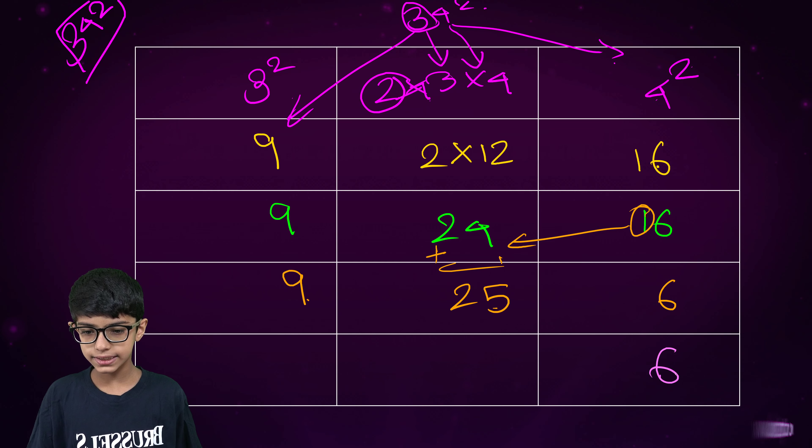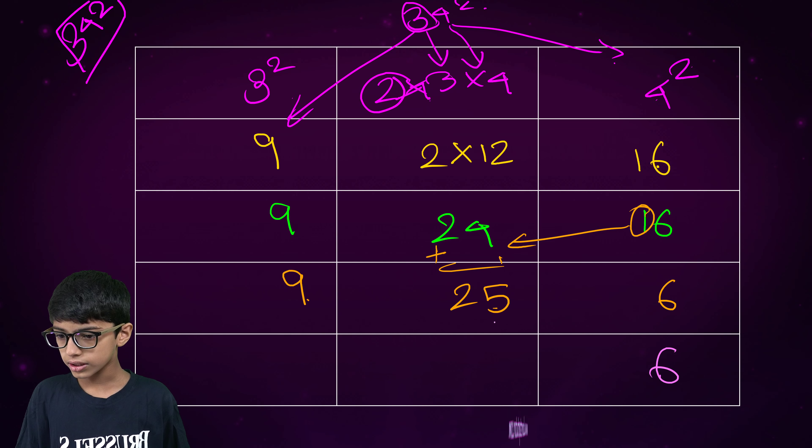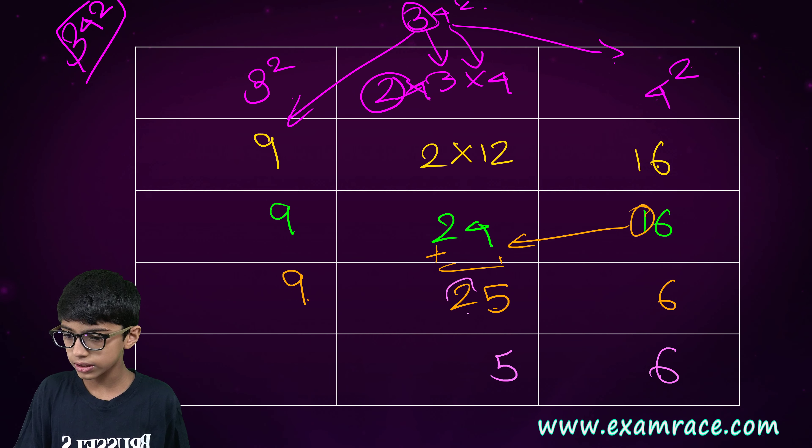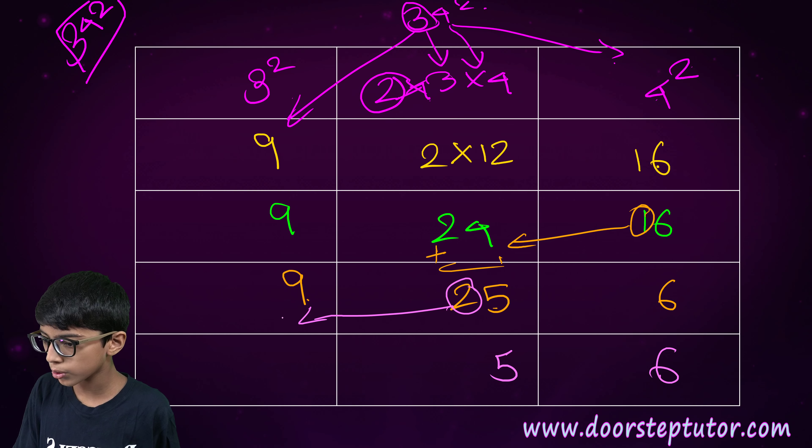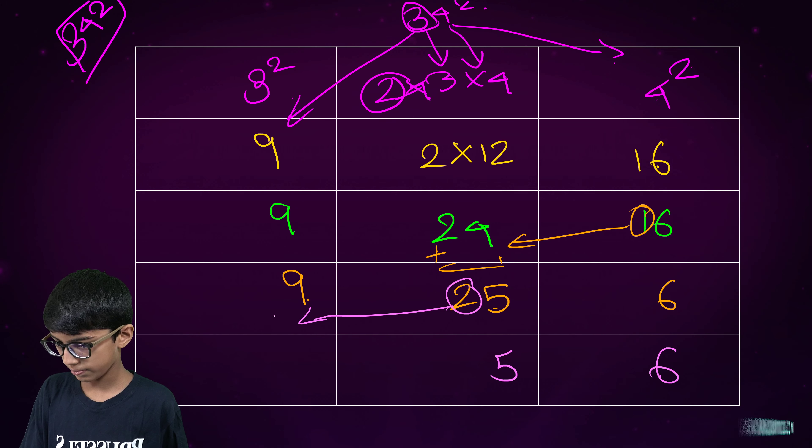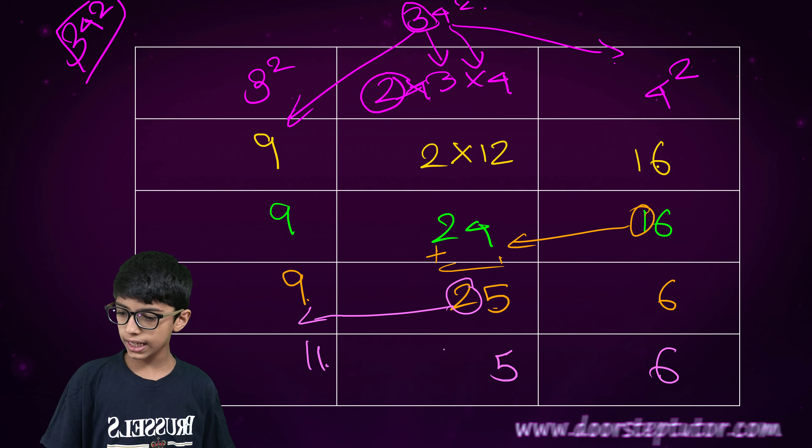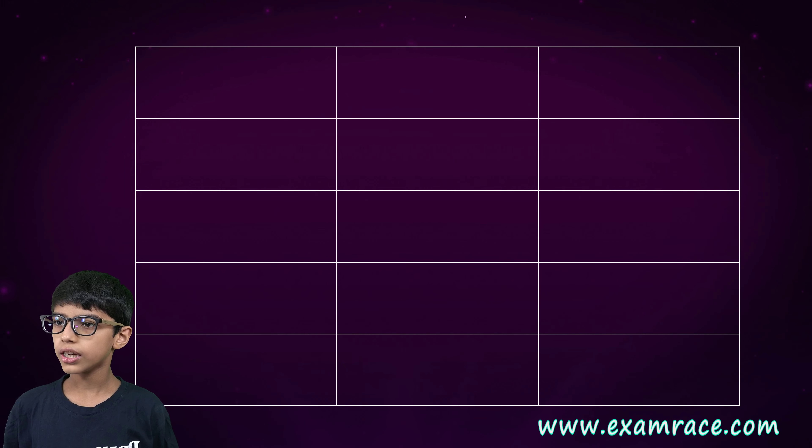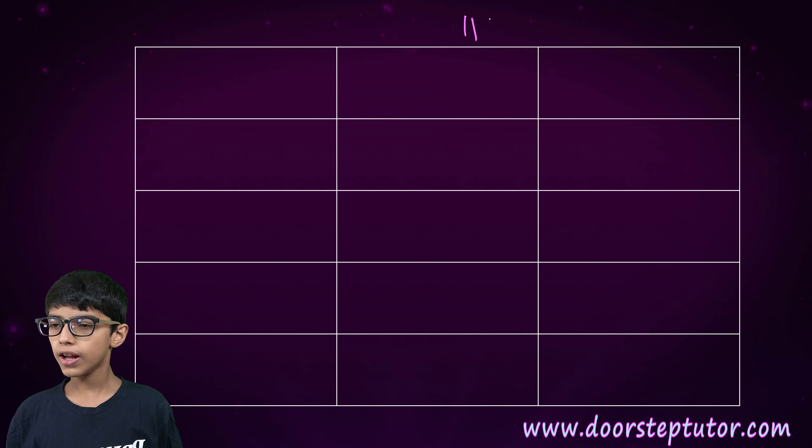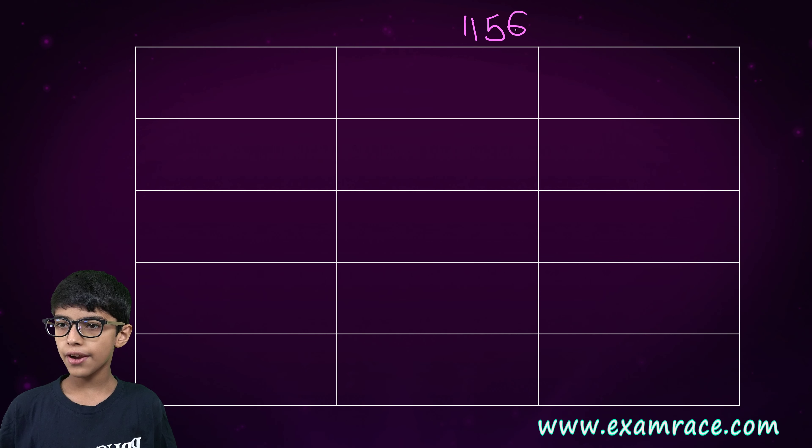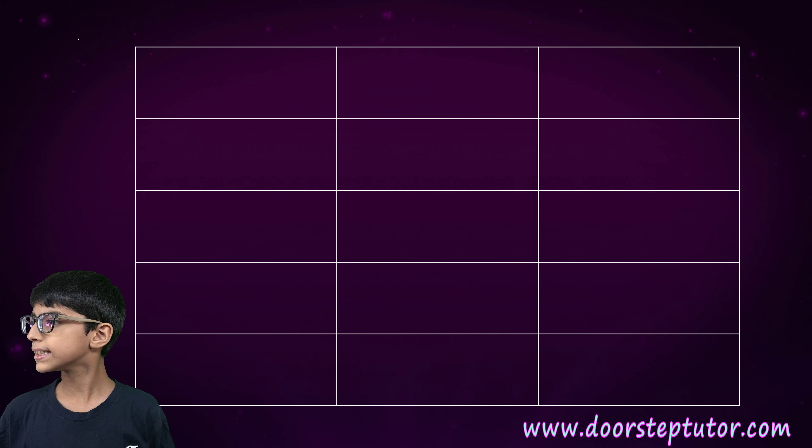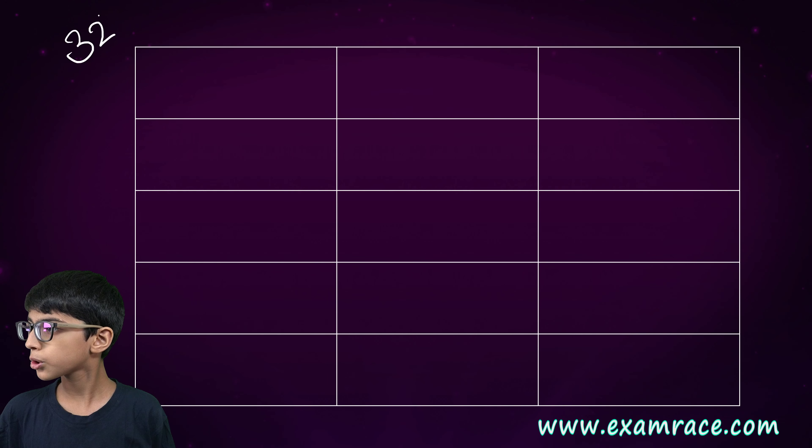Now, lastly, six will come as it is. Five will come as it is. Two will be added to nine. So, we get eleven. Therefore, our answer would be one thousand one hundred and fifty-six. Next is thirty-two square.